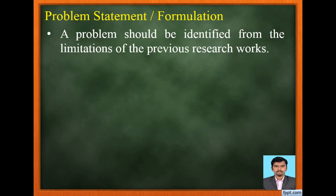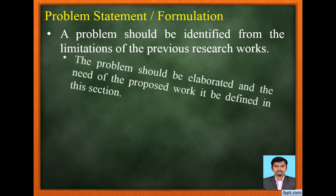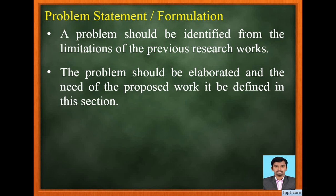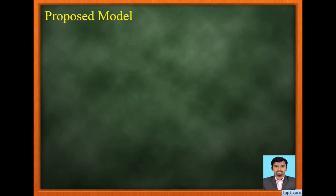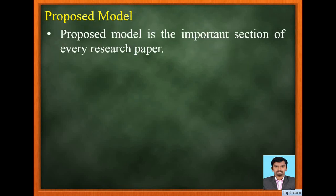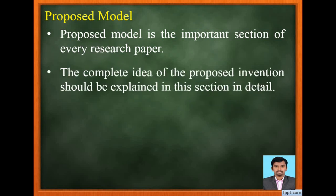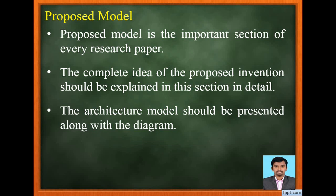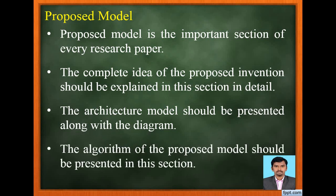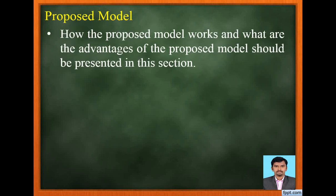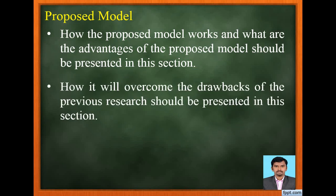The problem should be identified from the limitations of the previous research works, and the need of the proposed work should be defined in this section. Proposed model is the important section of every research paper. The complete idea of the proposed invention should be explained in detail. The architecture model should be presented along with a diagram. The algorithm of the proposed model, how it works, its advantages, and how it overcomes the drawbacks of previous research should all be presented in this section.